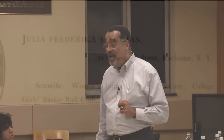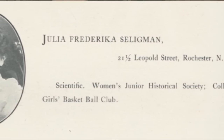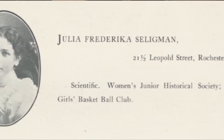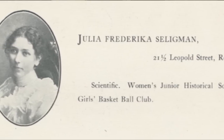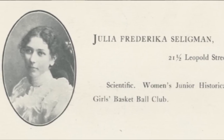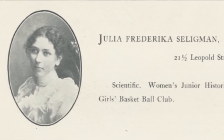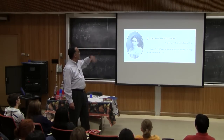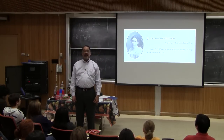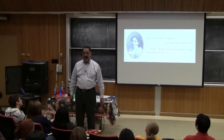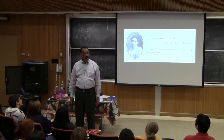The first woman to enroll at the University of Rochester in 1900 was Julia Frederica Seligman. When Joel and Frederica Seligman came to the university — he is our tenth president and she is his spouse — our jaws hit the floor when we saw this. Julia came and sat on the steps of Anderson Hall; whoever was in the office came out and said 'Young lady, what are you doing here?' She said 'Women have been admitted to the university — I'm here to register.' And register she did.